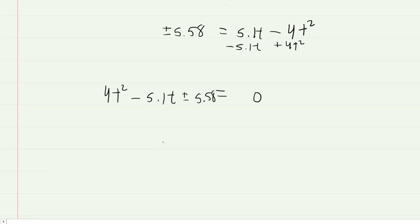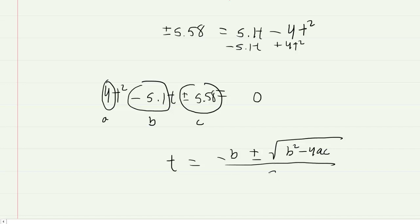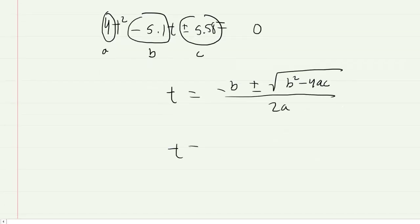And then we'll set up the quadratic formula in order to solve for t. So remember our a would be 4, our b is negative 5.1, and then our c will be plus or minus 5.58. Also don't forget the quadratic formula is negative b plus or minus square root of b squared minus 4ac all over 2a. So we'll go ahead and plug in our values here for a, b, and c. Notice we're going to have negative and then negative 5.1, so that will be just positive 5.1. And then under here we're going to have the negative 5.1 squared minus 4 times our a times our c which is plus or minus 5.58.